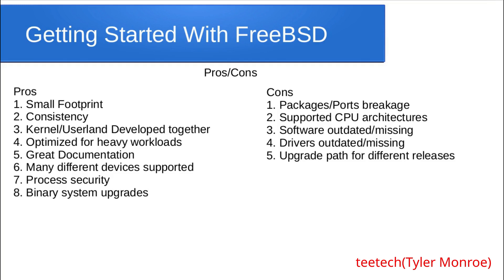The reason for that consistency is that the developers develop the kernel and user land together. The kernel is the brains that communicates with all the hardware, and the user land is all the programs we use to get work done. They develop it together so it doesn't get out of sync very often — other systems can get out of sync and cause incompatibilities and instability. It is also optimized for heavy workloads: it uses RAM very well, and it has SMP (Symmetrical Multiple Processor Support), so the code is very good at being multithreaded on different CPU cores. They also have great documentation — a handbook — very easy to follow.